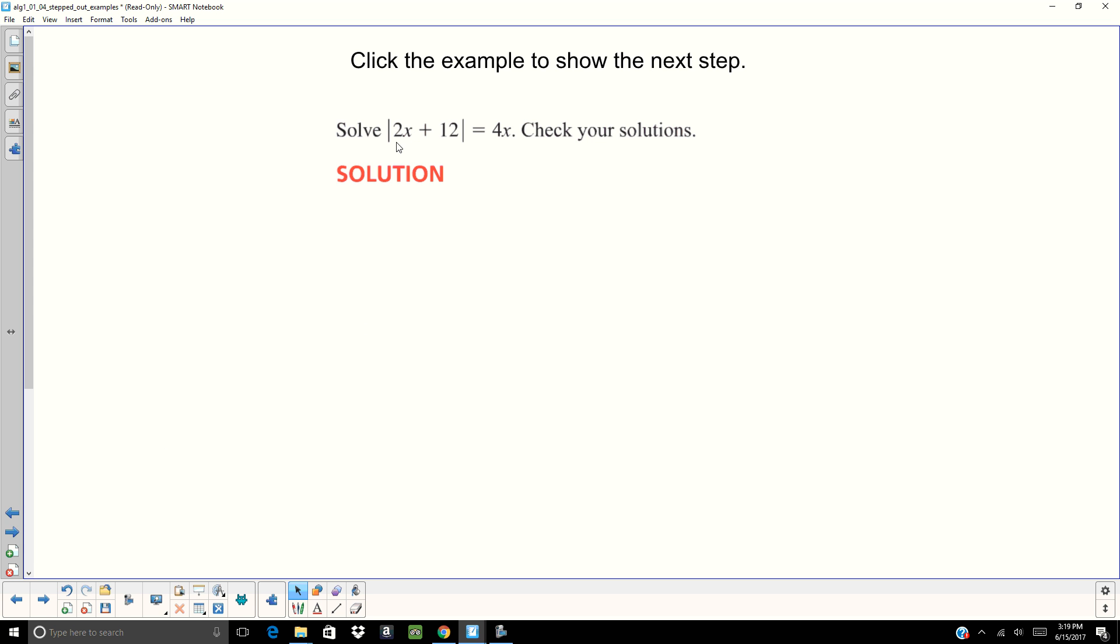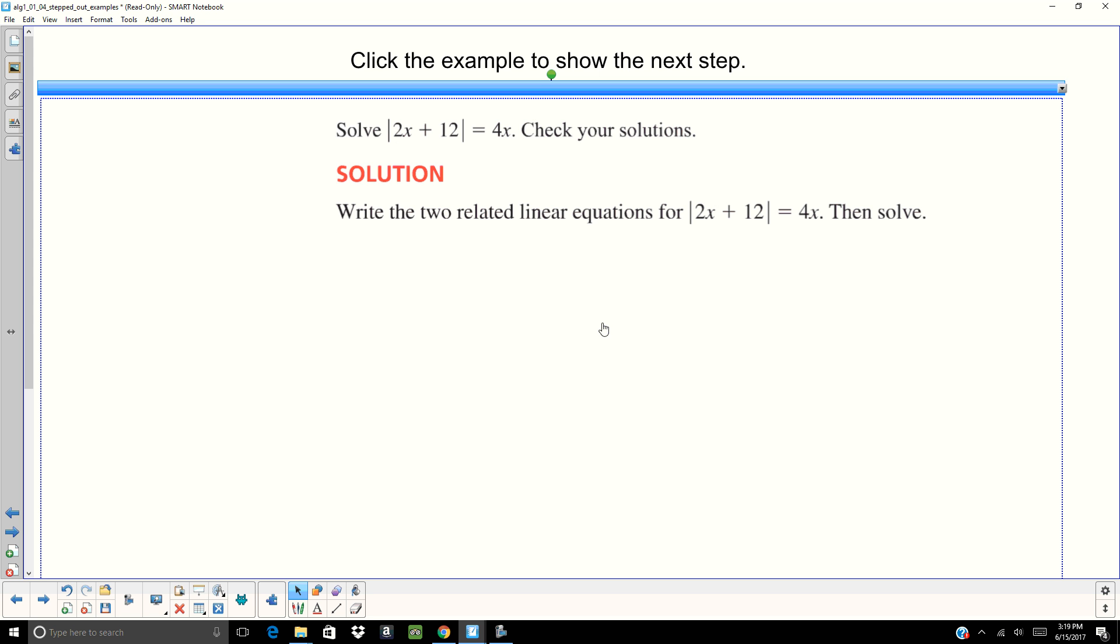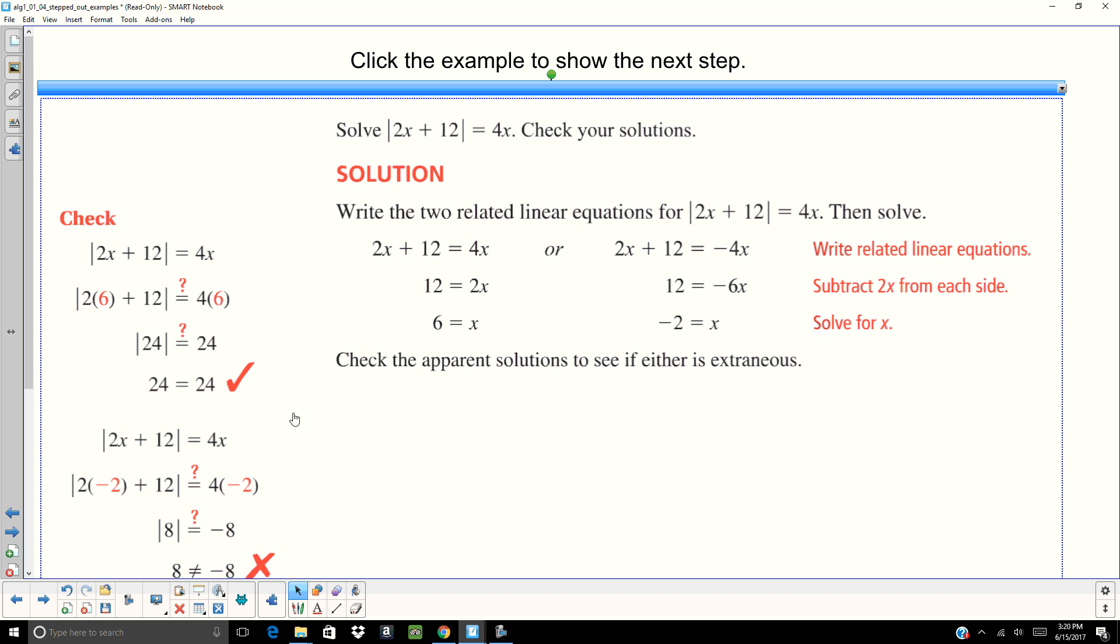All right. Here we have the absolute value of 2X plus 12 equals 4X. So we're going to write two equations. 2X plus 12 equals 4X. 2X plus 12 equals negative 4X. I'm going to subtract 2X from both sides. Divide by 2. And I get X equals 6. Subtract 2X from both sides. Divide by negative 6. X is going to equal negative 2. Again, we're going to want to check our answers to see if either one is extraneous. So I look at that first one and I put 6 in for X. And 2 times 6 is 12 plus 12 is 24. Take the absolute value. 24. 4 times 6 is 24. 24 does equal 24, so we're good.